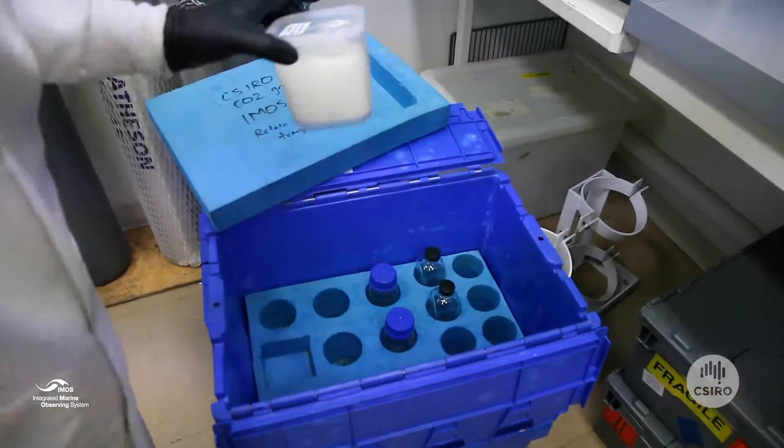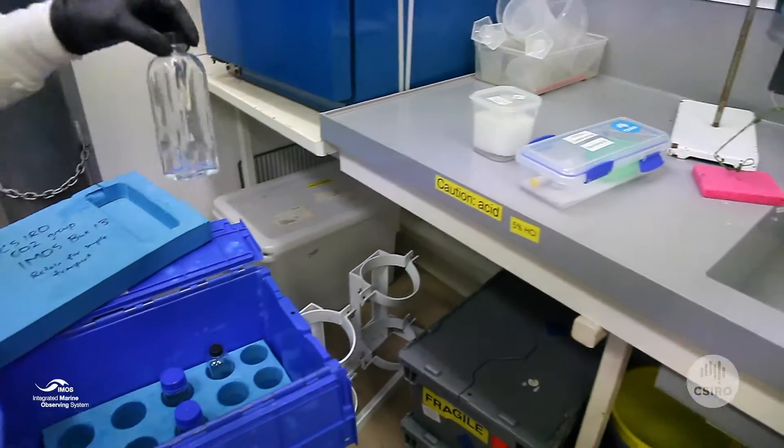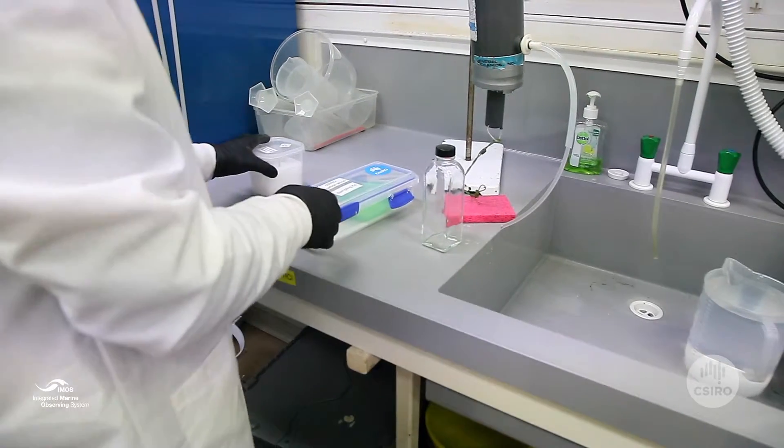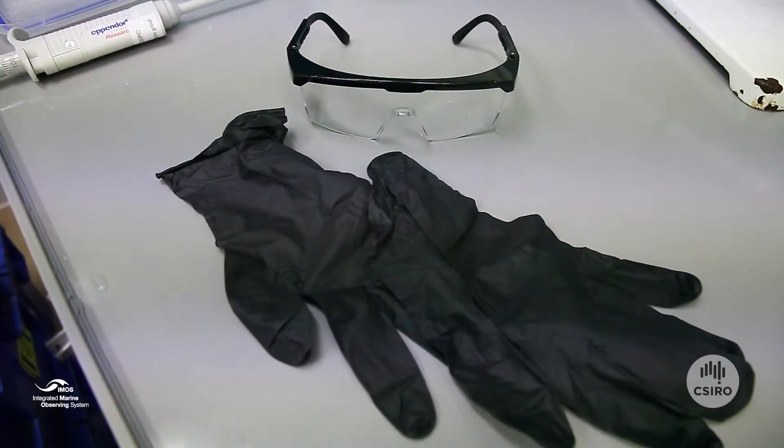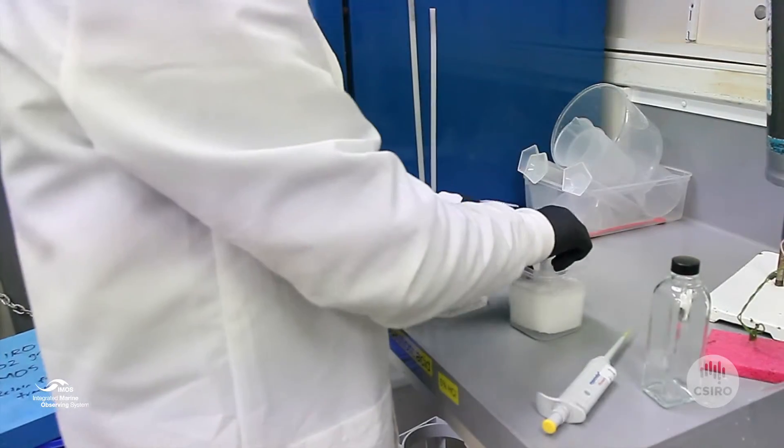I'm going to describe taking carbon samples from seawater. The blue box provided has two kinds of bottles and mercuric chloride. Please be careful with the mercuric chloride solution—it is poisonous.